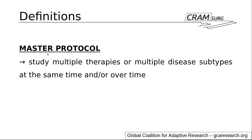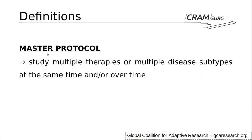Let's start by defining what a master protocol is. A master protocol is a protocol that allows you to study multiple therapies or multiple disease subtypes at the same time and/or over time. This is from the Global Coalition for Adaptive Research — an international group of researchers promoting the use of master protocols and particularly the adoption of adaptive randomized control trials.